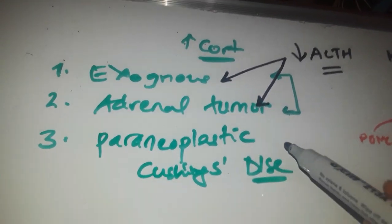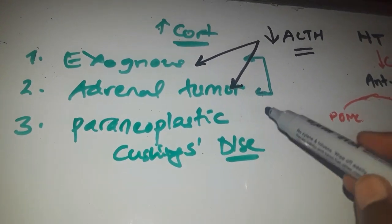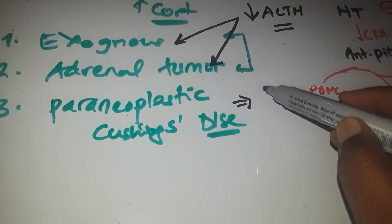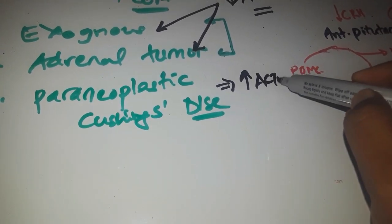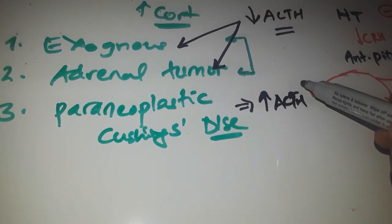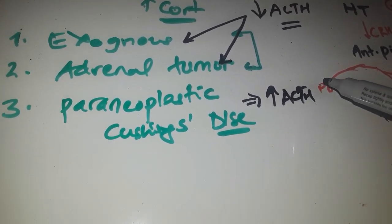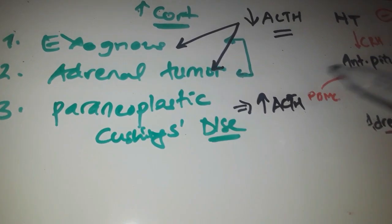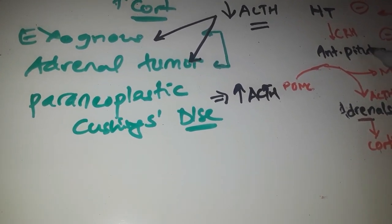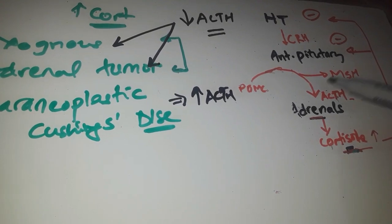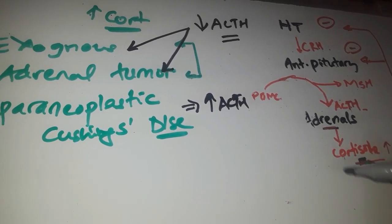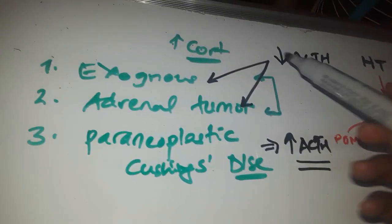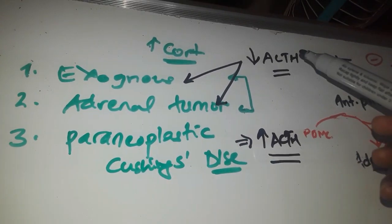Now let's talk about paraneoplastic tumors and Cushing's disease. These are tumors that secrete ACTH themselves, so ACTH is increased in the serum. For example, paraneoplastic tumors like small cell lung cancer secrete ACTH as part of their paraneoplastic syndrome, stimulating the adrenals to make cortisol. Cushing's disease is an anterior pituitary tumor which by itself secretes adrenocorticotropin hormone, activating the adrenals to make cortisol. So these two causes result in high ACTH, while exogenous and adrenal tumors result in low ACTH.